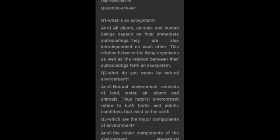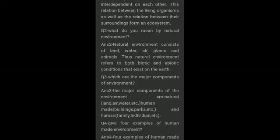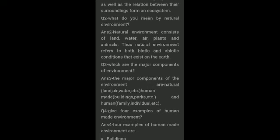What do you mean by natural environment? Natural environment consists of land, water, air, plants, and animals. Natural environment refers to both biotic and abiotic conditions that exist on the earth, and you very well know what is biotic and abiotic.